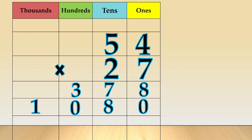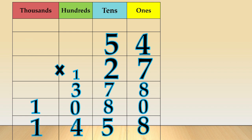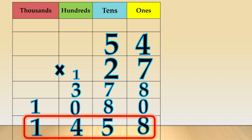8 plus 0 is equal to 8. 7 plus 8 is equal to 15 — which we regroup as 5 tens and 1 hundred. So, 1 plus 3 plus 0 equals 4, and we bring down 1. Our final answer is 1,458.